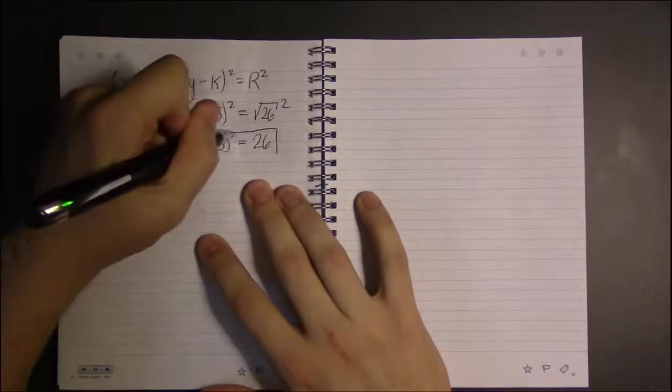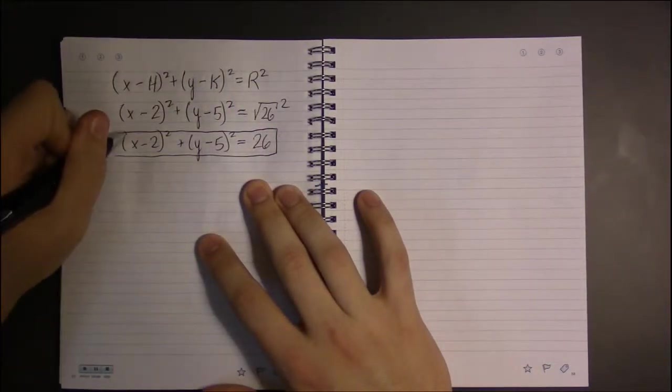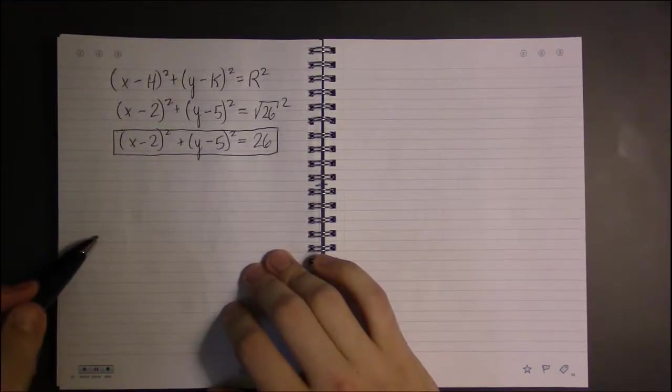We filled in for the center, we filled in for the radius. X and Y are supposed to be variables. So that's the equation of the circle.